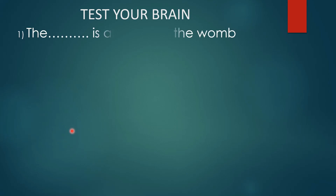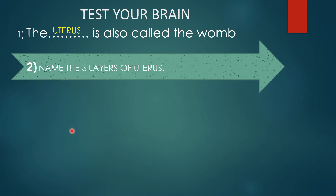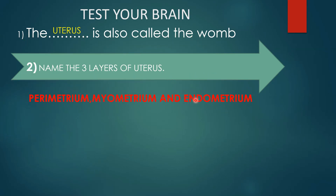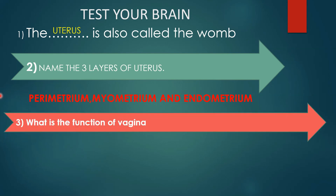Now it is time to test your brain. First question: the blank is also called the womb — the answer is uterus. Second question: name the three layers of the uterus — perimetrium, myometrium, endometrium. Third question: what is the function of the vagina? Pause and try to recollect. The answer is childbirth and menstrual flow — even if you wrote parturition, that is also accepted. These are the two main functions of the vagina — every month, once the female reaches puberty: menstrual cycle and parturition.